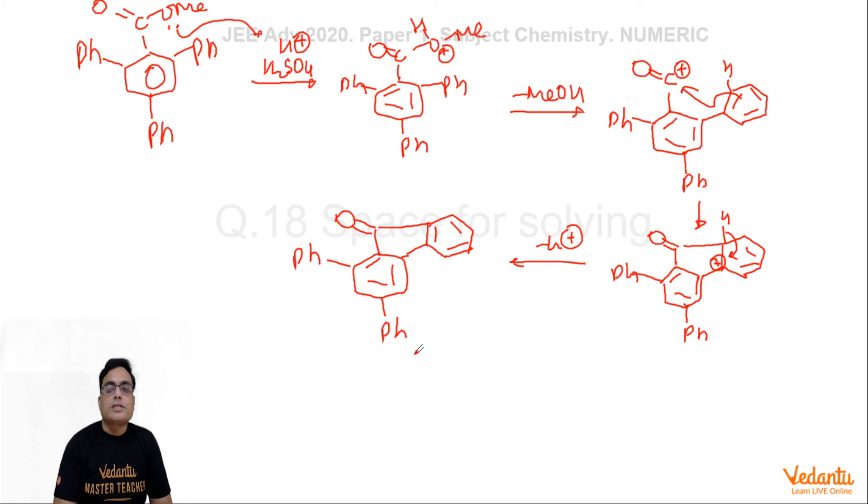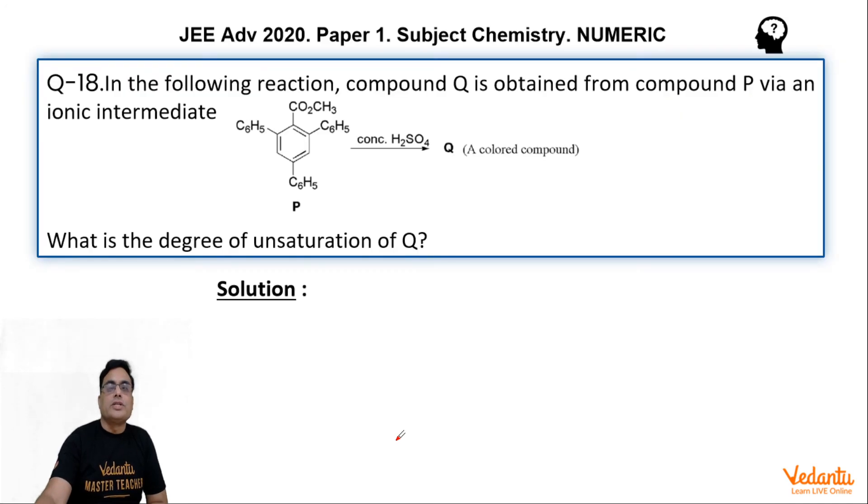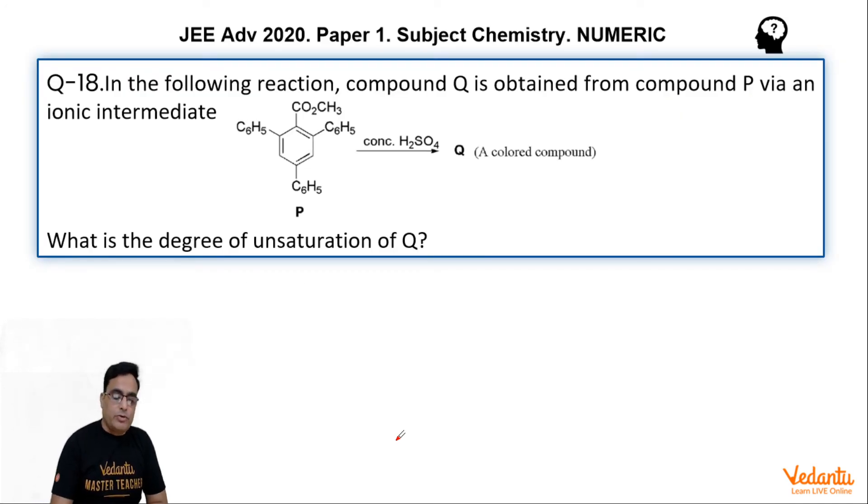Now they are asking: this is the final product Q, and what is the DU of Q? So let us calculate the DU. For this phenyl ring DU is 4, for this phenyl ring 4, so 8. For this it is 12, this is 16 and 17, and this is a pi bond, so total DU of the final product is 18.